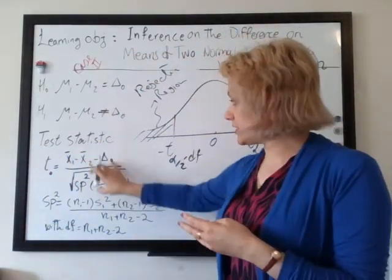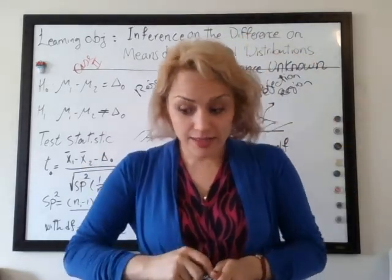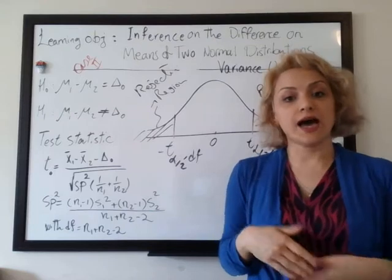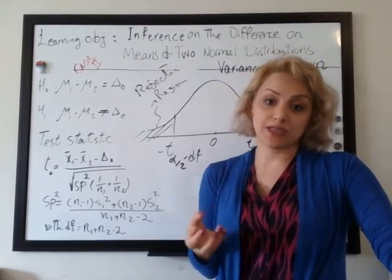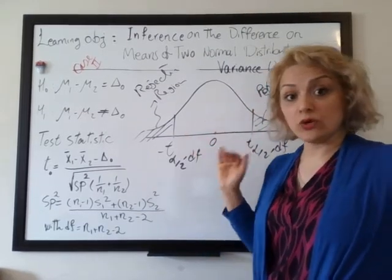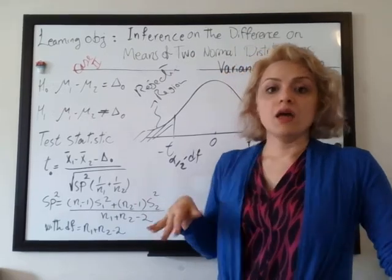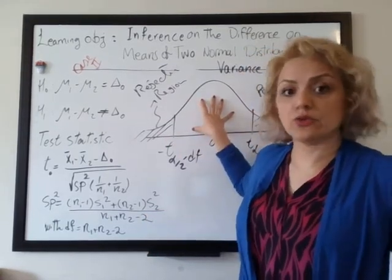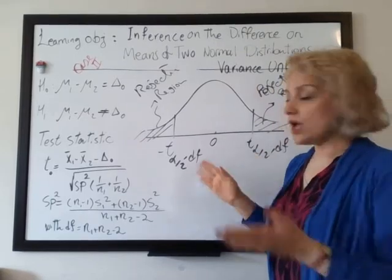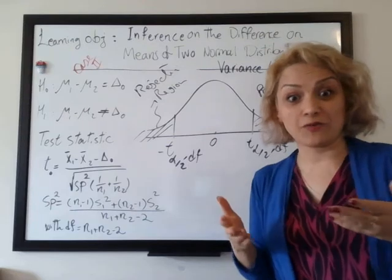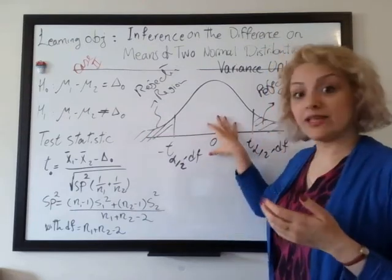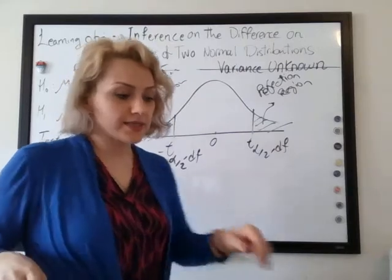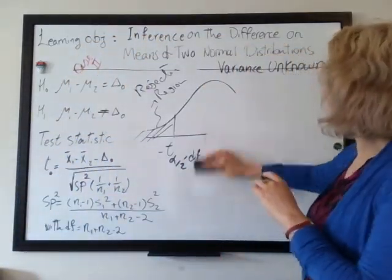Step seven is calculation — putting all the numbers in. Step eight is the conclusion. For the conclusion, we compare T-null. If T-null falls in the rejection region, we reject the null hypothesis. If T-null was not in the rejection region, we fail to reject the null hypothesis. The null hypothesis represents the area where x-bar-one minus x-bar-two is within the expected range — we are not in the rejection area, so there is no type one error being triggered.